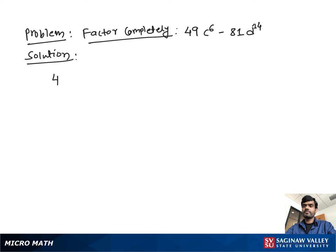Factor completely 49C to the 6th minus 81D to the 14th. To make it easy, we write both terms in square form, so you can write 49C to the 6th as 7C to the third all to the square.